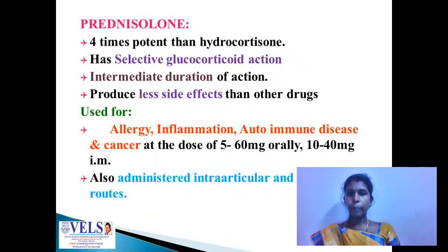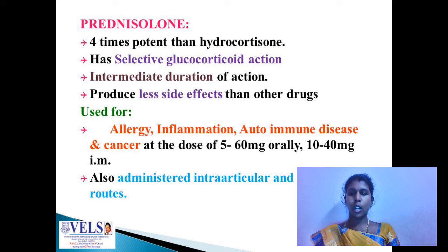Prednisolone is a more potent drug than hydrocortisone, having selective glucocorticoid action, while hydrocortisone has both glucocorticoid and mineralocorticoid action. It produces an intermediate duration of action and has fewer side effects compared to other glucocorticoids. It is used in the treatment of allergy, inflammation, autoimmune disease, and cancer, at dosages of 5 to 60 mg orally and 10 to 40 mg intramuscularly. It is also administered via the intra-articular route.